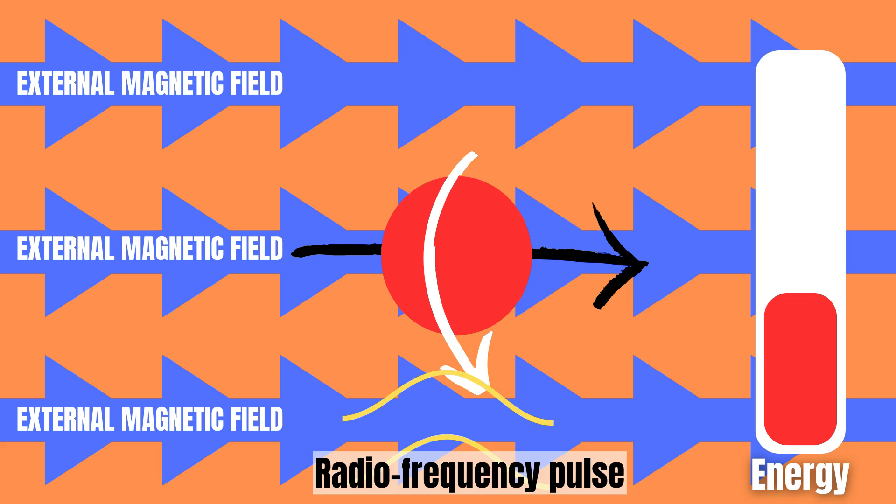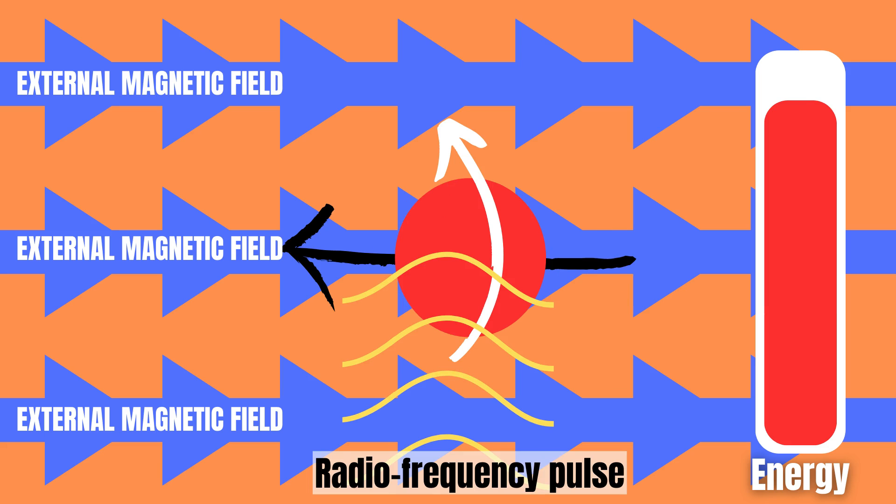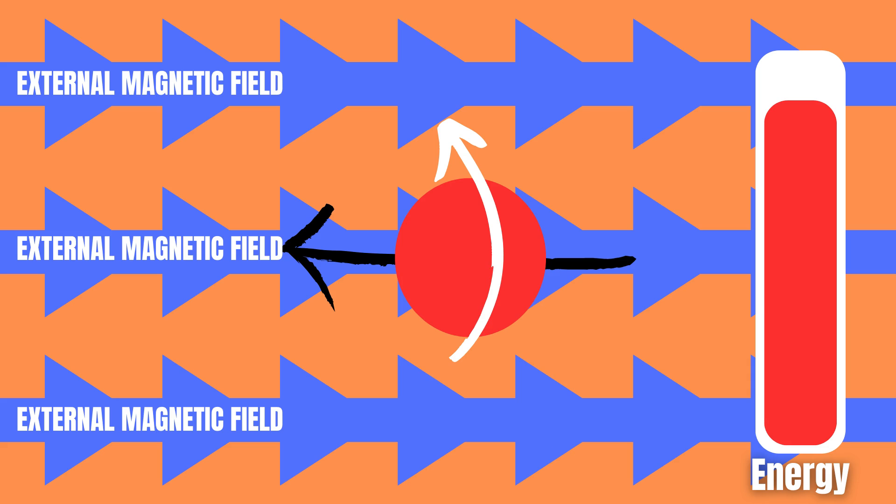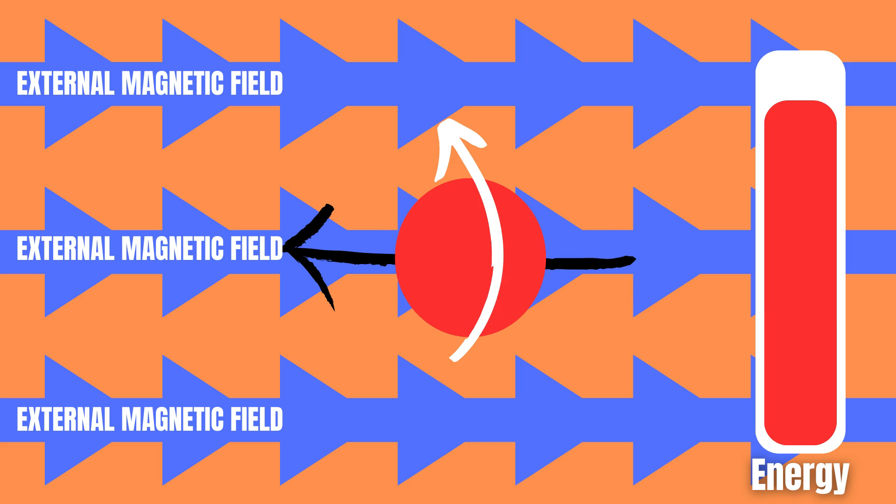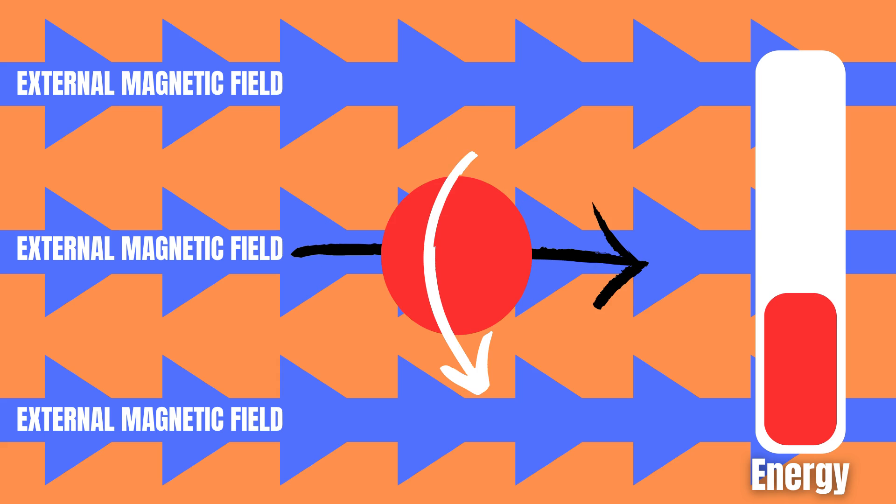The sample is then exposed to bursts of radio waves of the right frequency, causing the nuclei to flip from aligning with the magnetic field to aligning against it. In other words, the nuclei move from a lower energy state to a higher energy state.